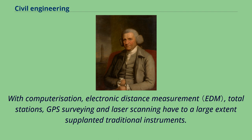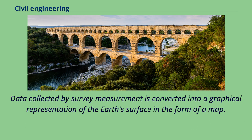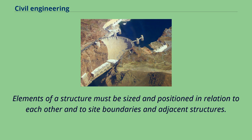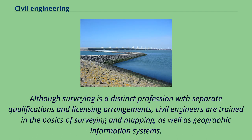Data collected by survey measurement is converted into a graphical representation of the earth's surface in the form of a map. This information is then used by civil engineers, contractors and realtors to design from, build on, and trade, respectively. Elements of a structure must be sized and positioned in relation to each other and to site boundaries and adjacent structures. Although surveying is a distinct profession with separate qualifications and licensing arrangements, civil engineers are trained in the basics of surveying and mapping, as well as geographic information systems.